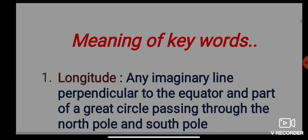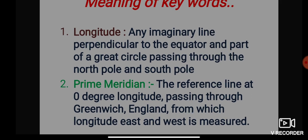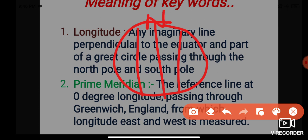Let's learn the meaning of the keywords. What is longitude? It is an imaginary line perpendicular to the equator and part of a great circle passing through the north pole and south pole. As I've shown you, longitude is an imaginary line passing through the north pole and the south pole.